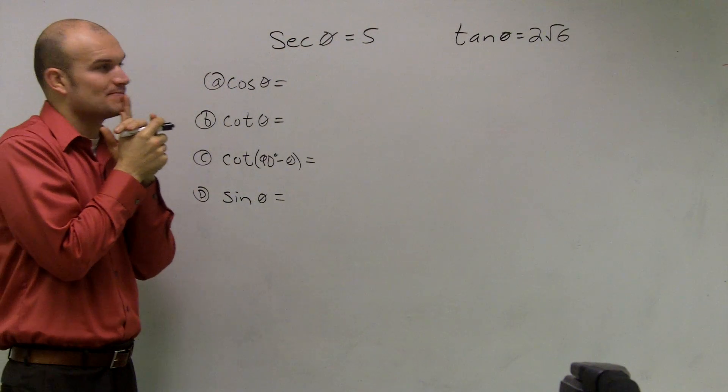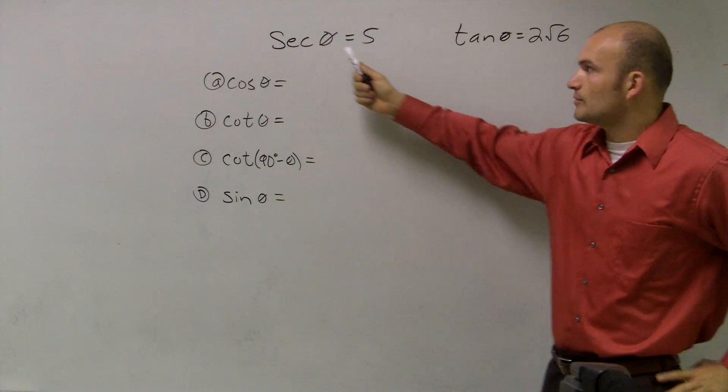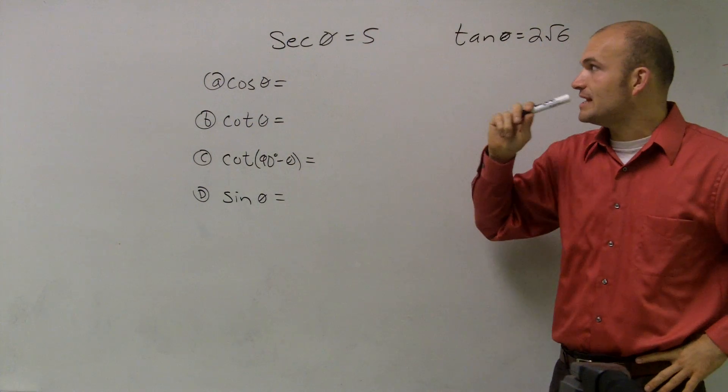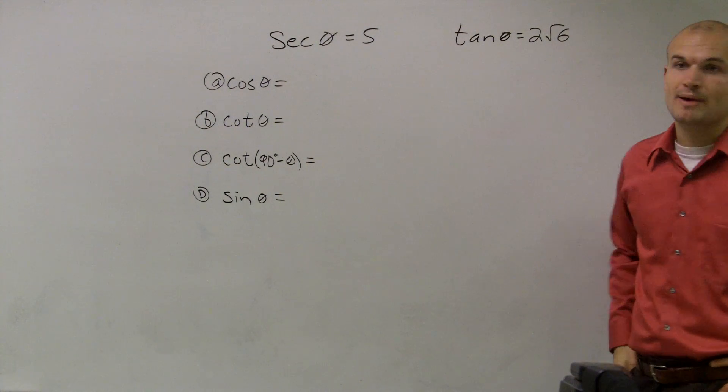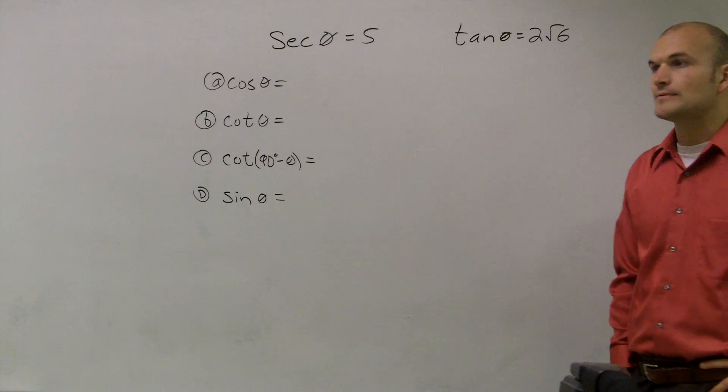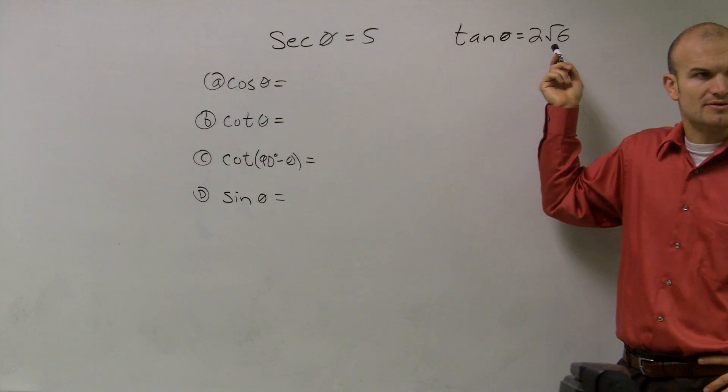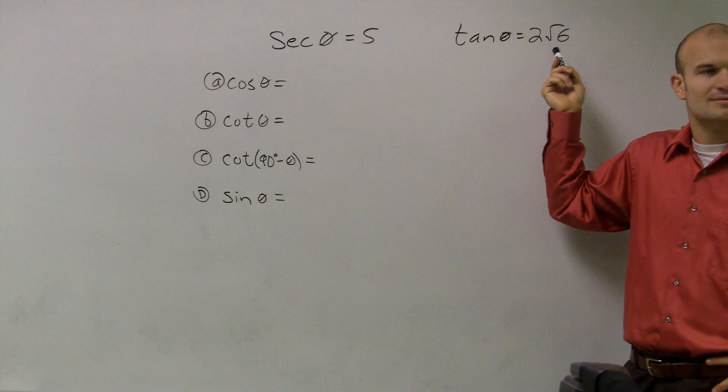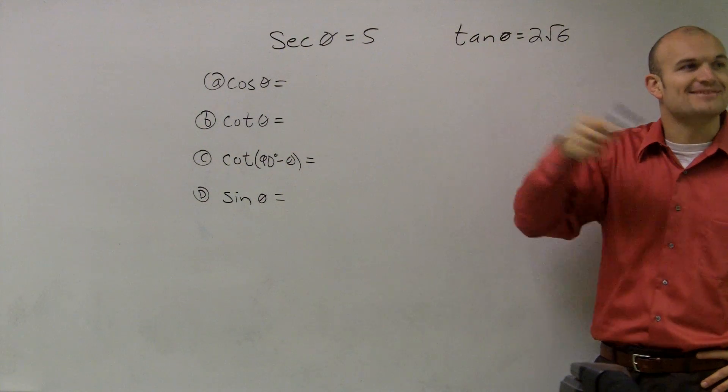I'm trying to think of the best possible way to help you guys remember how to do these. We're given secant of theta equals 5, and we know that tangent of theta equals 2 times radical 6.